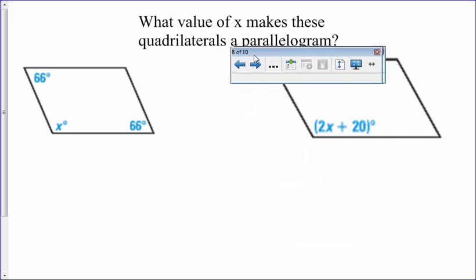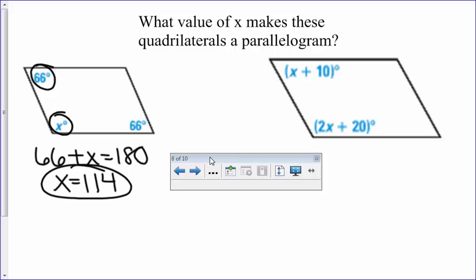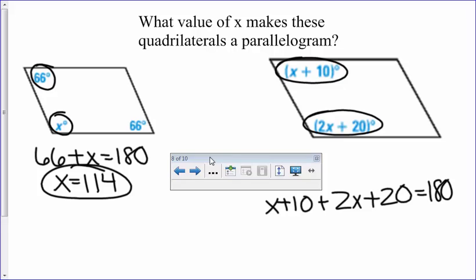So we're going to see which value of x will make these quadrilaterals a parallelogram. The first one gives us angles that are not opposite, but same side interior. So we should remember that 66 plus x should equal 180. They're consecutive interior angles. That means x needs to be 114 for that to be a parallelogram because they need to equal 180. Next, we're the same thing where we have two angles. That means we need to add these up and equal them to 180. For the value of x, to find that to make it a parallelogram. So when you go through all your math and combine like terms, 3x plus 30 equals 180. Subtract the 30, divide by 3. You get x to equal 50. So if x is 50, then that is a parallelogram.